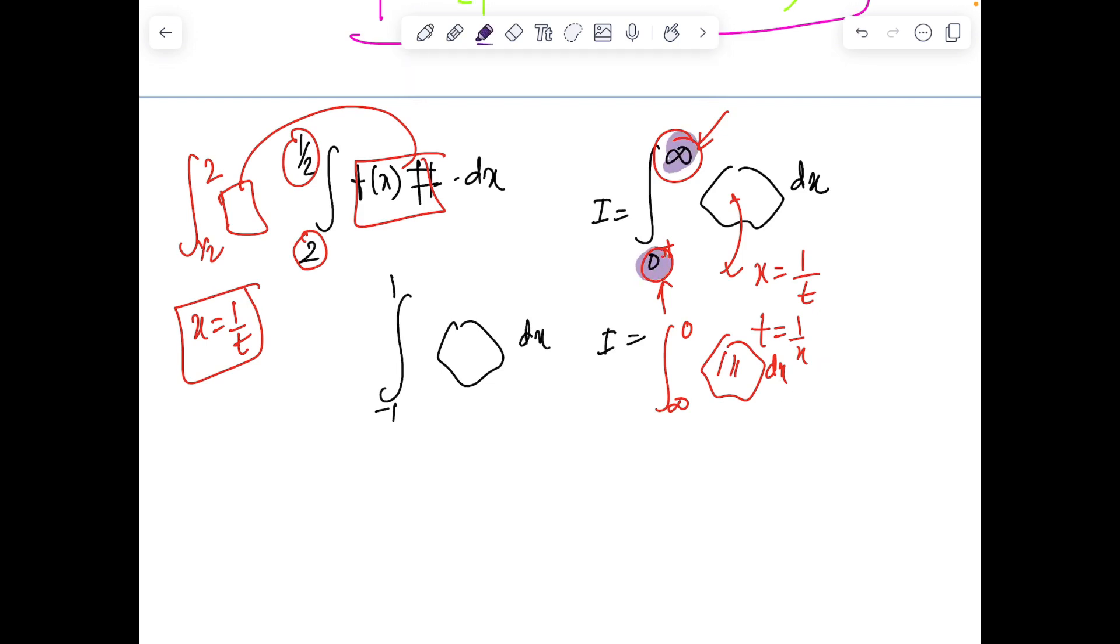The point is, whenever we have different limits and a number with its reciprocal, one of the most fundamental ideas to think of is substitution x = 1/t. Here you can also think x = -1/t for -1 to 1. But this substitution is usually used when you have odd function property or King's rule. If odd function isn't working, then x = -1/t is another line of thinking.